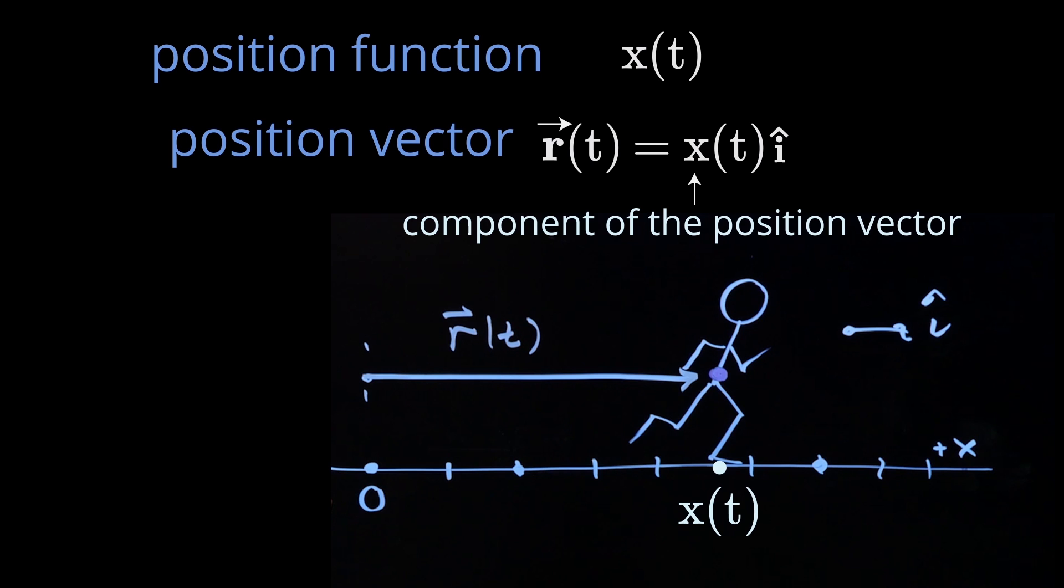And that component, x of t, can be positive, as you see in this particular case. x of t can also be 0. That's if you're located at the origin. And if our runner is on the other side of the origin, x of t can be negative.